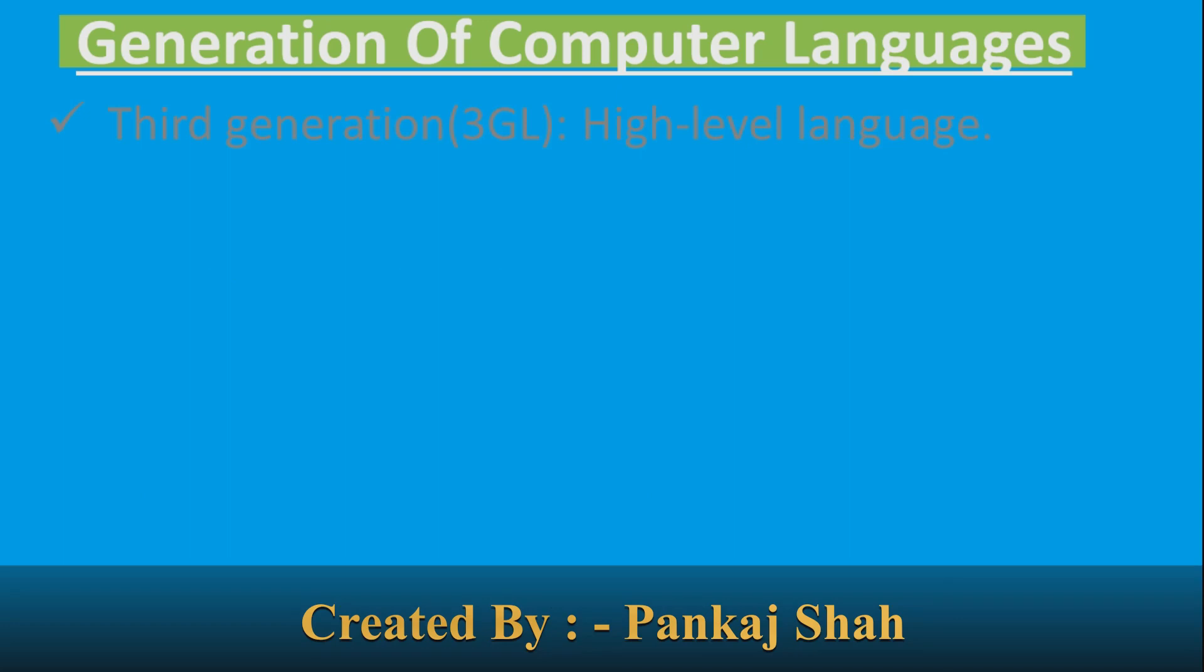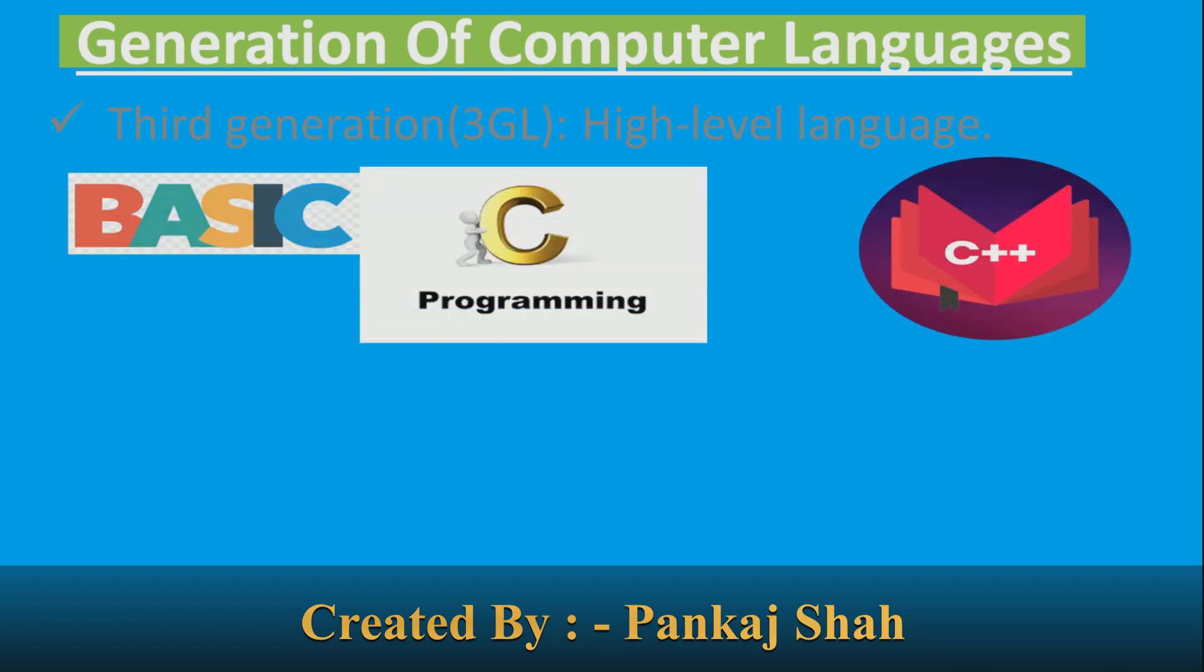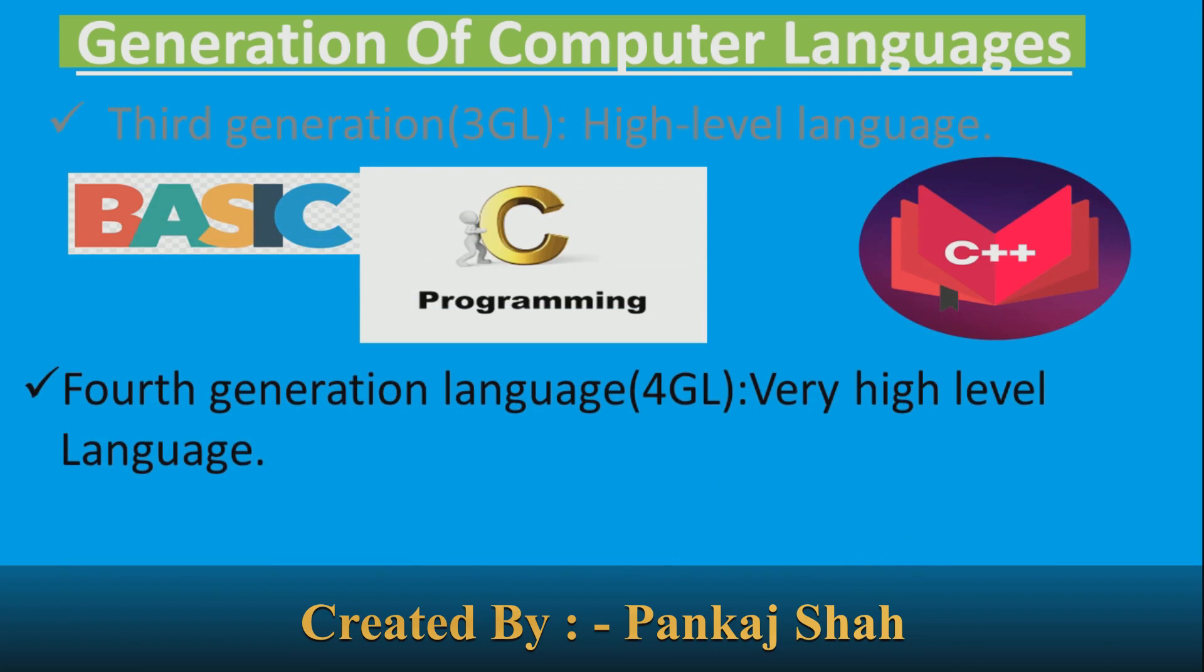This generation of language contains instructions in the form of English-like commands to perform a task. Examples are BASIC, C, C++. Fourth generation language: Very high level language. It is a programming language or programming environment designed with the specific purpose of developing commercial business software.